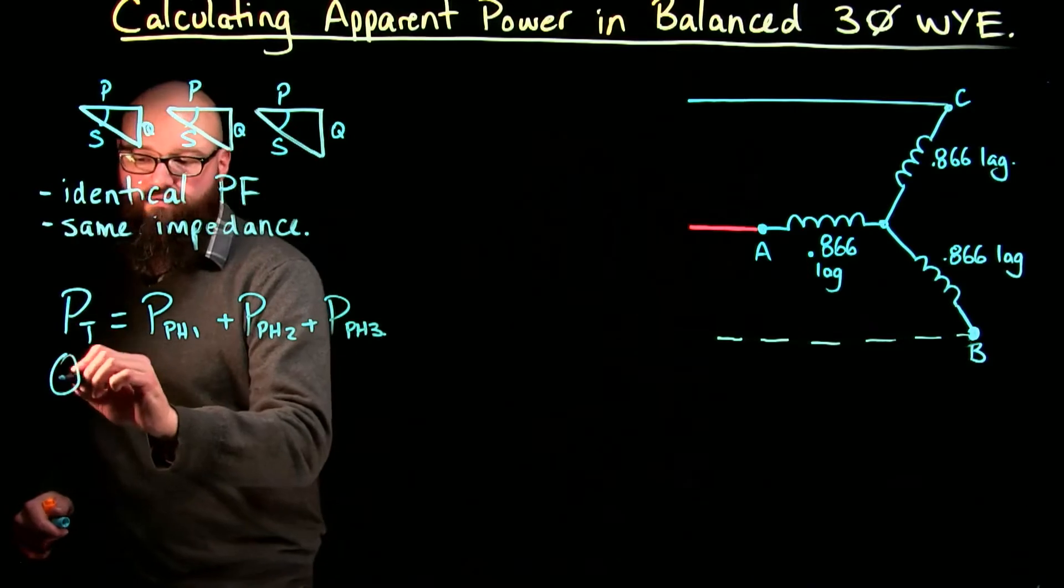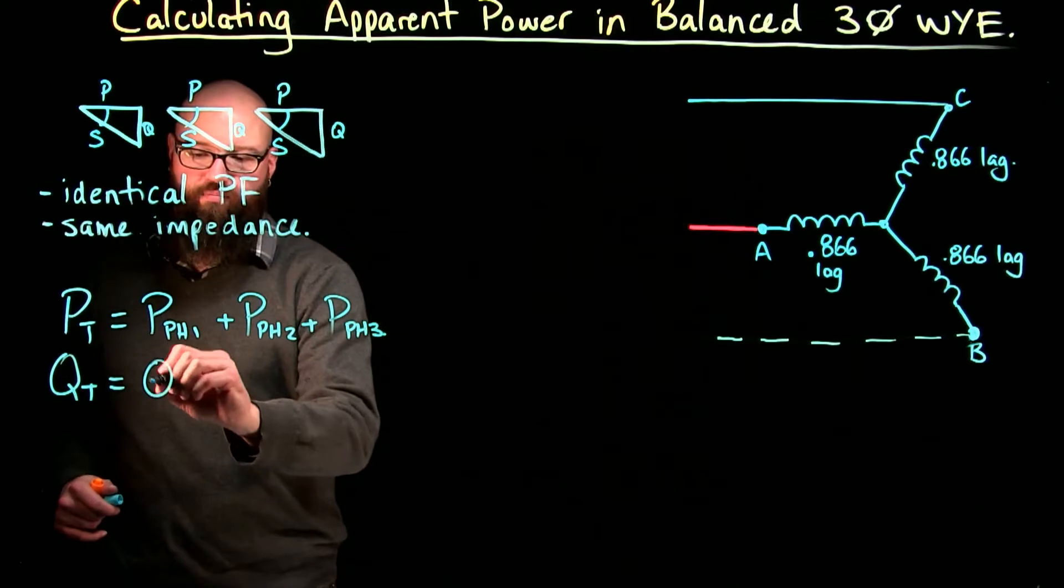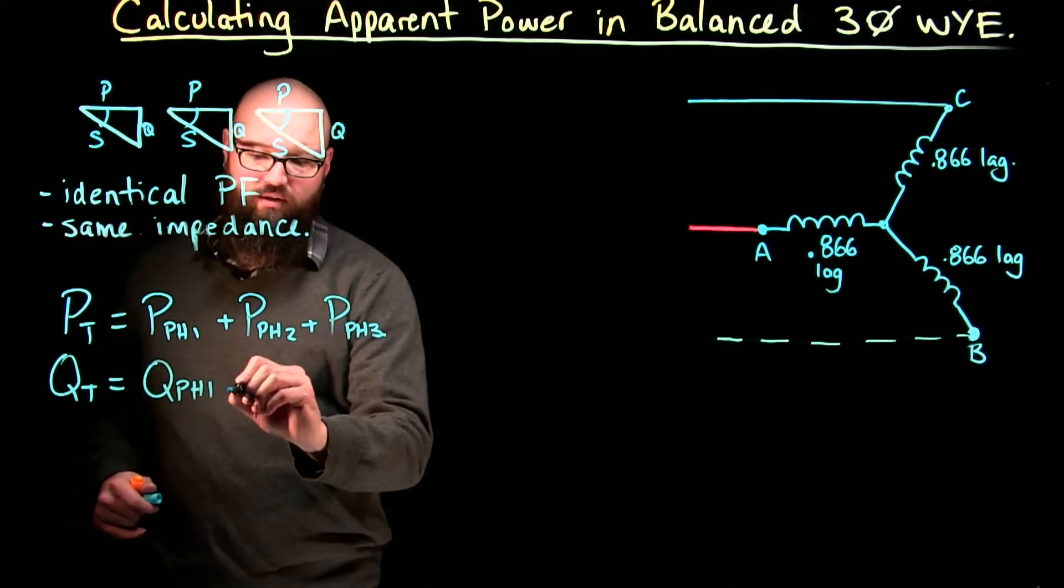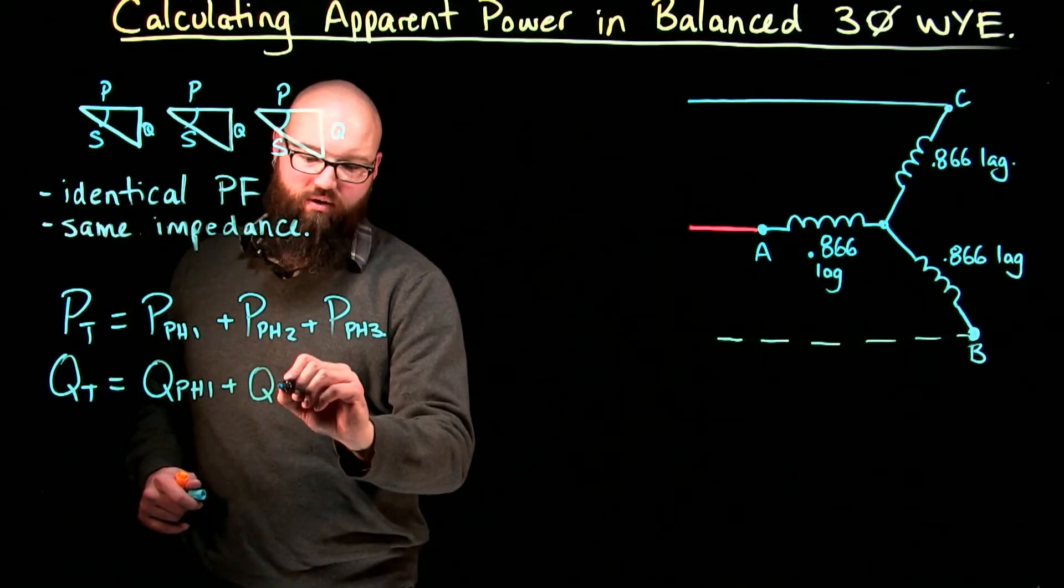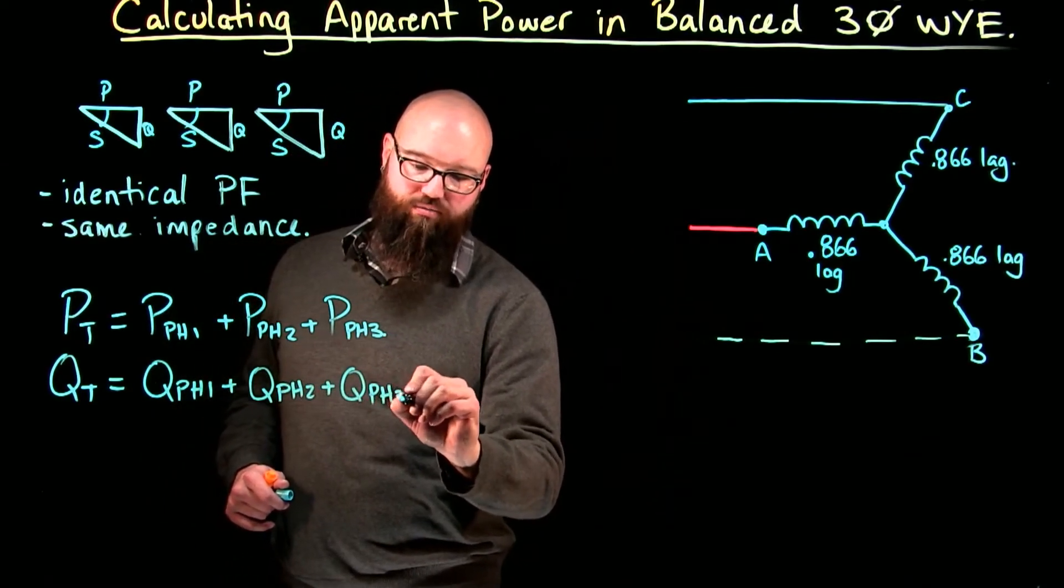Same thing can be said for reactive power. Reactive power total in our circuit is equal to the reactive power of phase one plus the reactive power of phase two plus the reactive power of phase three.